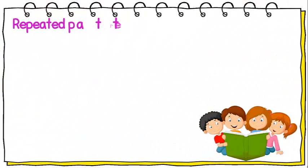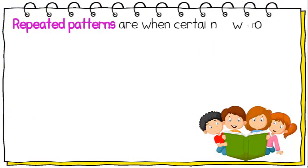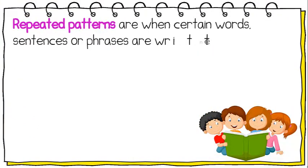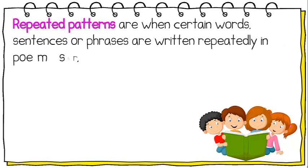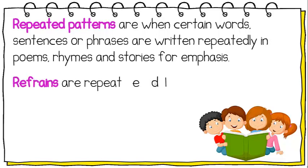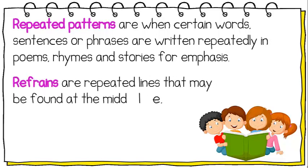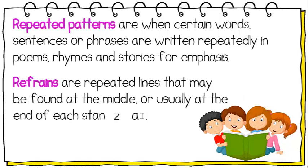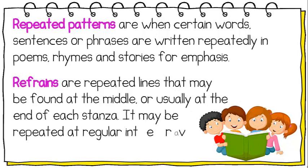Repeated patterns are when certain words, sentences, or phrases are written repeatedly in poems, rhymes, and stories for emphasis. Refrains are repeated lines that may be found at the middle or usually at the end of each stanza. They may be repeated at regular intervals.